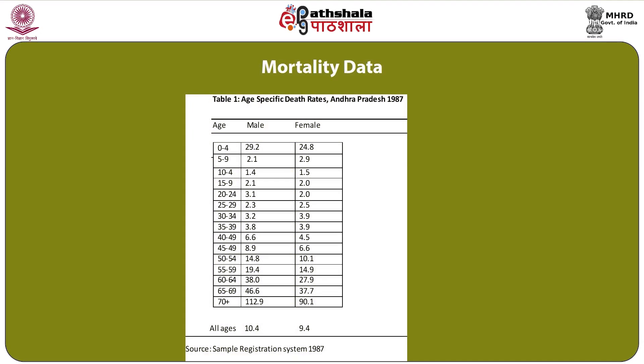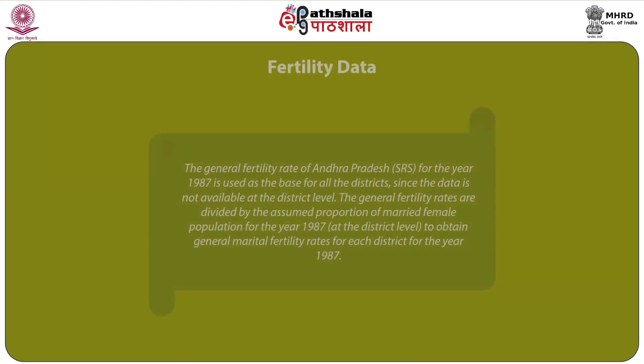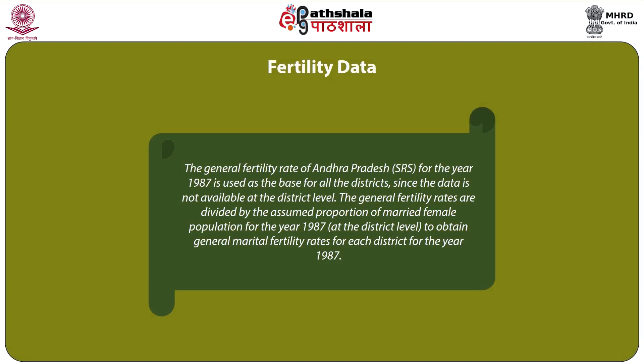Age-specific death rates for Andhra Pradesh 1987 were presented across different age groups for male and female, along with population distribution in percentages. In the case of fertility data, the general fertility rate of Andhra Pradesh from the SRS for the year 1987 is used as the base for all districts, since district-level data was not available at that time. The general fertility rates are divided by the assumed proportion of married female population for the year 1987 at the district level to obtain general marital fertility rates for each district for the year 1987.